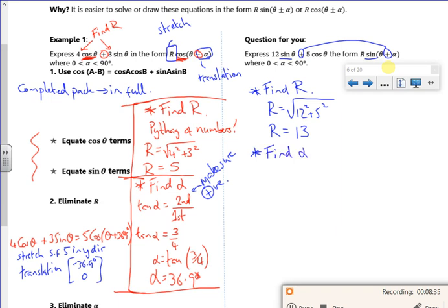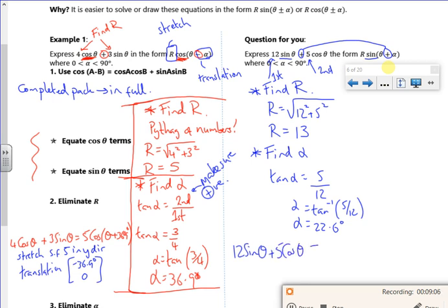So tan alpha is 5 over the first number, over 12. So alpha is the inverse tan of 5 over 12, which matches the pack. So that gives me alpha of 22.6 degrees, if the pack's right. So I'm saying that 12 sine theta that I didn't know how to draw, plus 5 cos theta, so that I have no idea what that looks like, is actually just a sine graph with a stretch scale factor 13 in the y direction and a translation. Was that a plus or a minus up there? That's a minus, isn't it? That should be a plus there. That there is a minus. Sorry, I've written all over it there before. Yeah, plus 22.6 degrees there. There we go.